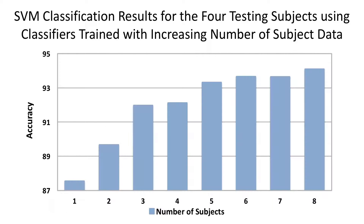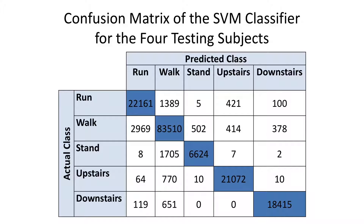This graph presents the SVM classification results for the four testing subjects using classifiers trained with an increasing number of subjects. As the number of subjects increases, the accuracy of the classification improves as well, from 87.5% to 94.1%. This table shows the confusion matrix of the SVM classifier for the four testing subjects, with an overall accuracy of 94.1%.